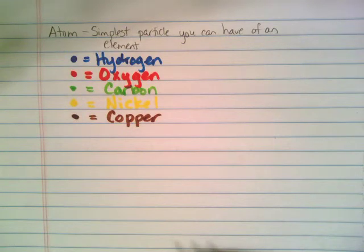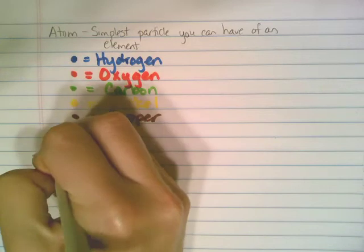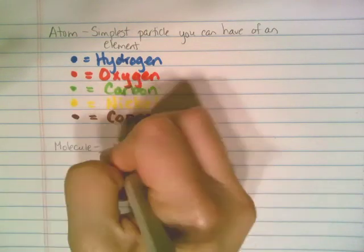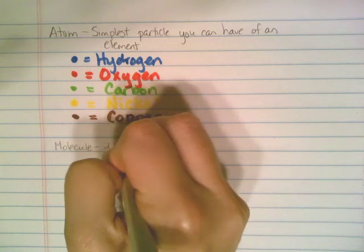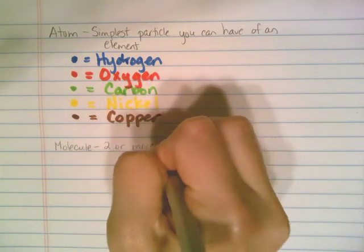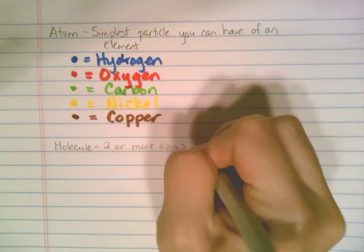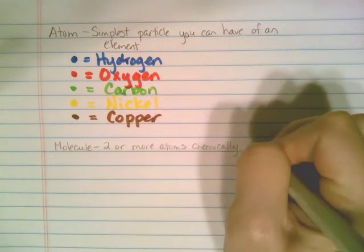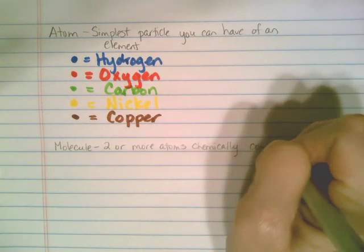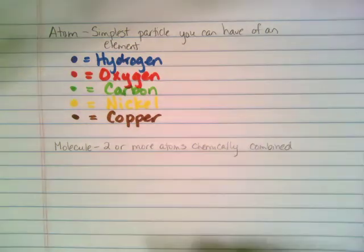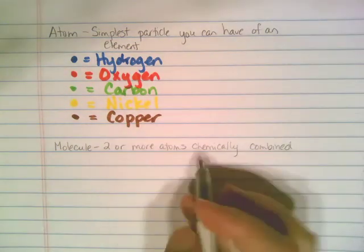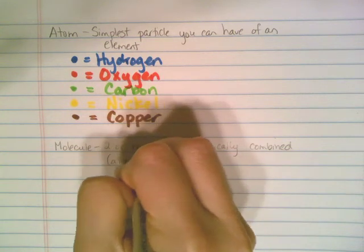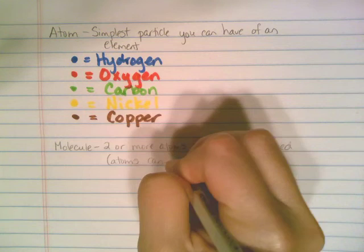Anytime you take multiple atoms and start putting them together, you start to get what's called a molecule. A molecule is anytime you have two or more atoms chemically combined. In other words, they've got some kind of chemical bond between the atoms. The atoms could be of the same element or of different elements.